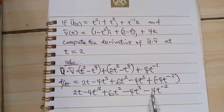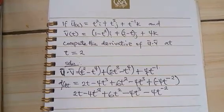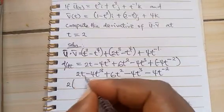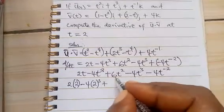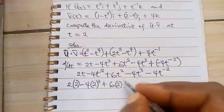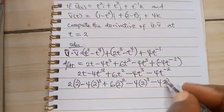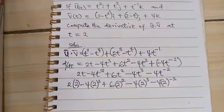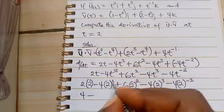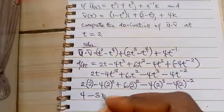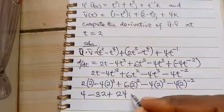Now the next thing that we are now asked to do is at t equals 2. What this means is anywhere I see t I substitute it for 2 and evaluate. So I'll have 2 into 2 minus 4 into 2³ plus 6 into 2² minus 4 into 2³ minus 4 into 2^(-2). So we have 2 times 2 is 4 minus 4. This is 8, 8 times 4 will give us 32 plus. This is 4 times 6 will give us 24. This is 8 times 4 will give us 32.